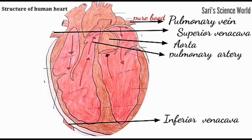The superior vena cava brings blood from the upper part of the body, and the inferior vena cava brings blood from the lower part of the body. This blood then goes to the right ventricle, and from the right ventricle it goes to the lungs through the pulmonary artery for purification. The pulmonary artery is the only artery which carries impure blood.